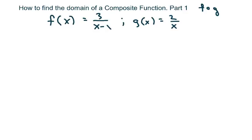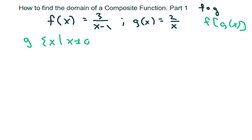Step one in the procedure is to state the domain of g — that's your inner function. So we're doing f of g of x, and the domain of g is all real numbers but x cannot be zero. Then state the domain of f, which is all real numbers but x cannot be one, because you can't divide by zero.